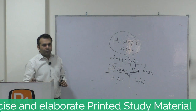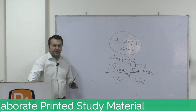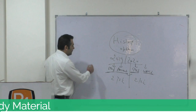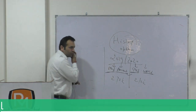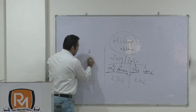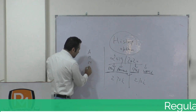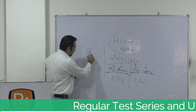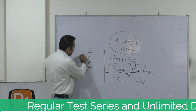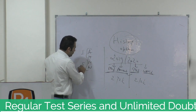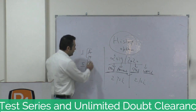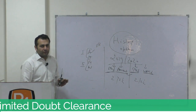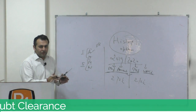That means another four to four and a half months and their course will be comprehensively covered. For all four papers — two papers and two components of both papers — that is Ancient and Medieval India in Paper 1, and Modern India and World History in Paper 2, we have at least five to six different sources for every component.